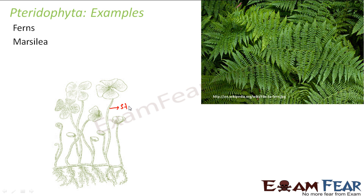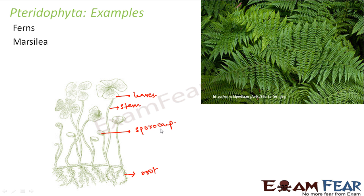This picture of marsilia shows how everything is distinct — you can see the stem, the roots, and the leaves. There are also small structures called sporocarps. A sporocarp is a structure that produces and releases spores. In marsilia, these sporocarps release spores that are carried over distances by wind and give rise to new plants.